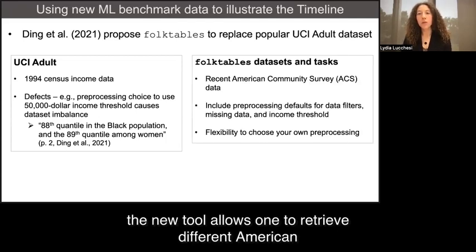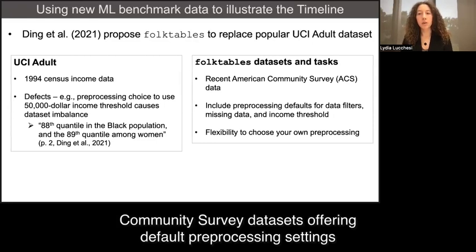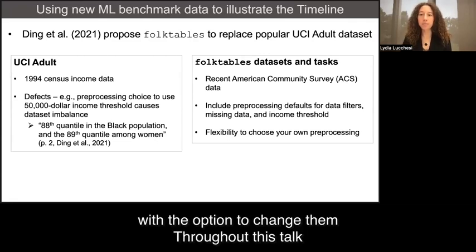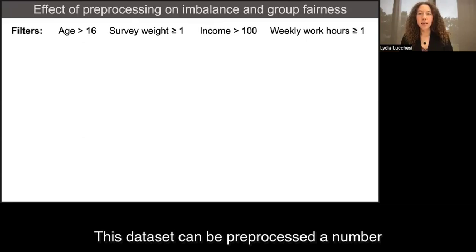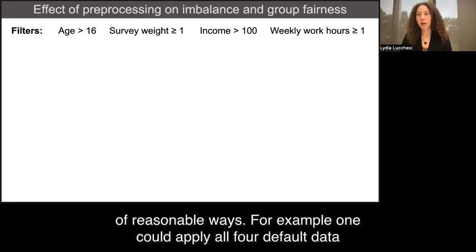The new tool allows one to retrieve different American community survey datasets, offering default pre-processing settings with the option to change them. Throughout this talk, we use a 2015 California income dataset.